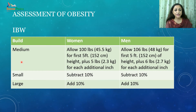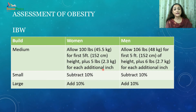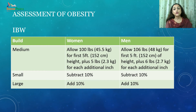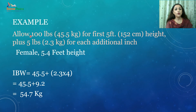Let us take an example of a medium-built woman. For a woman, we allow 100 pounds (45.5 kg) for the first 5 feet of height, then add 5 pounds (2.3 kg) for each additional inch of height. For men, there is a similar equation. If the lady is of smaller frame, we subtract 10% of the calculated weight; if large frame, we add 10%.